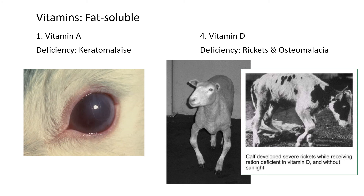Vitamin D deficiency causes rickets and osteomalacia. Animals and humans can make vitamin D when out in sunlight, so the chances of a vitamin D deficiency are low — but in cases where people keep livestock indoors or in barns without going outside, this can happen. The animal needs to go outside at least a few minutes to produce vitamin D in their skin. Rickets shows knocked knees, soft and brittle bones. Osteomalacia is basically rickets but happens in older animals, whereas rickets happens in young animals.